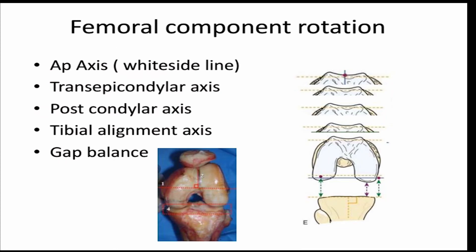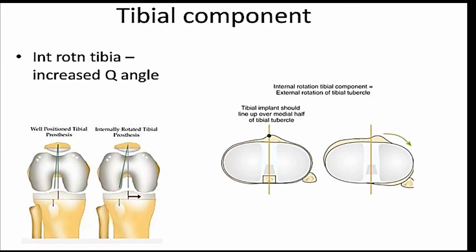The rotatory alignment of the femoral component was mentioned previously. For the tibial component, it should be centralized such that the center of the tibial implant is placed over the medial one-third of the tibial tubercle. If the tibial component is internally rotated, this will translate after reduction of the joint into external rotation of the tibia, with subsequent subluxation and maltracking of the patellofemoral joint.